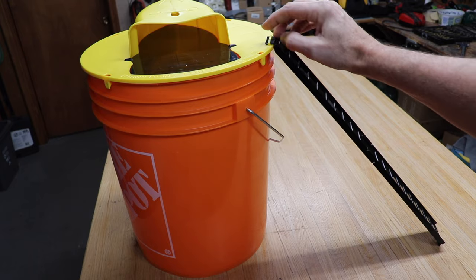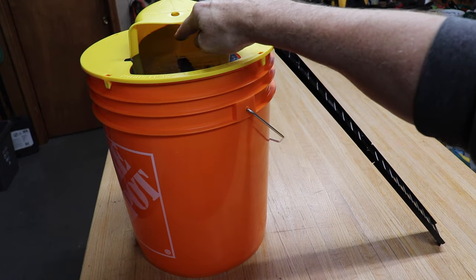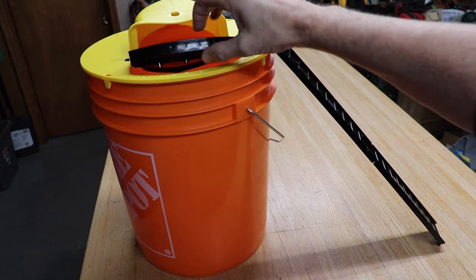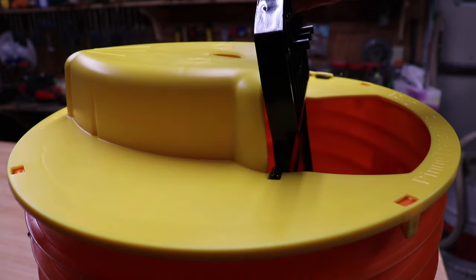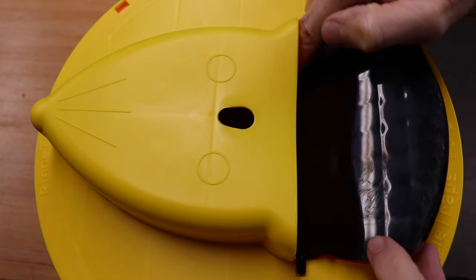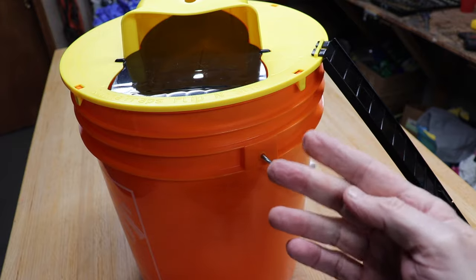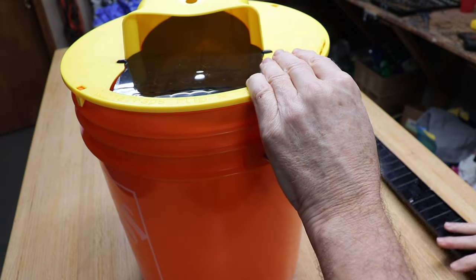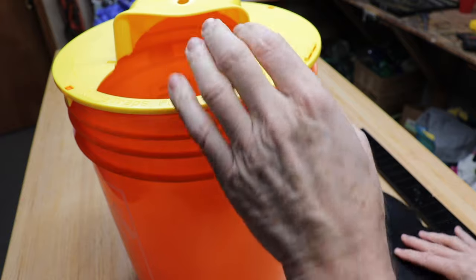So the mice just climb up the ladder, they go onto the flipper, smell the bait, go towards the back and they get flipped right into the bucket. And after one drops in it just resets itself for the next mouse. And then you just remove the ladder and the flipper and lay it on its side to release them.